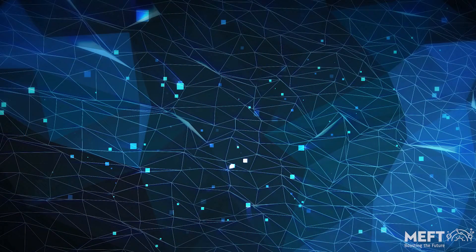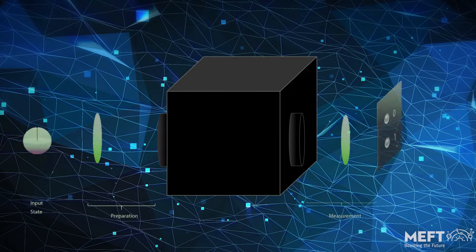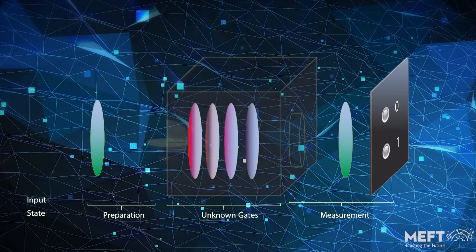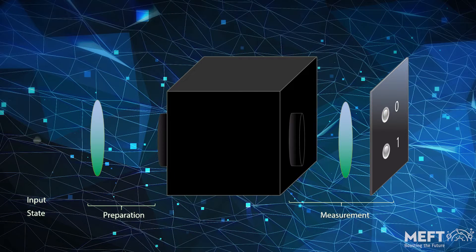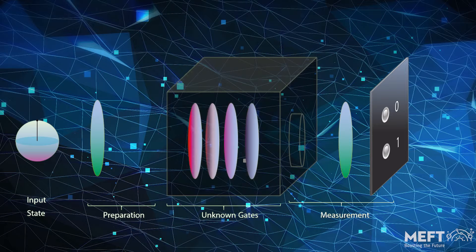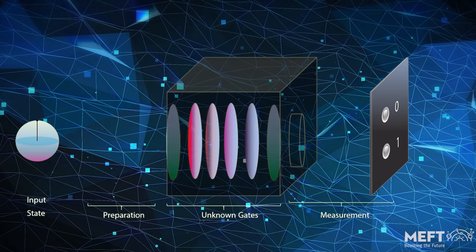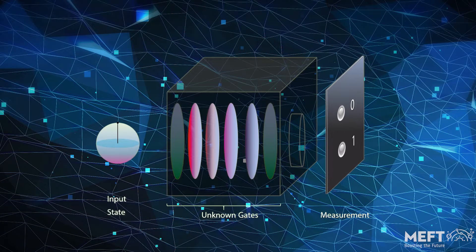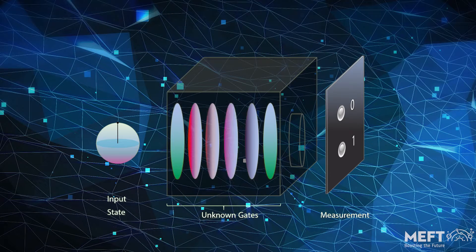The state-of-the-art characterization technique is called gate-set tomography. It tries to describe an unknown process by feeding it different prepared input states and characterizing its outputs. The problem is that both the state preparation and the measurement are also imperfect processes and so they need to be characterized as well. At the end of the day, this means that we are trying to characterize all the gates in a quantum black box at once. In this box, we can only program different sequences of faulty gates that act on a single input state, and get a binary measurement output which we can't completely trust.